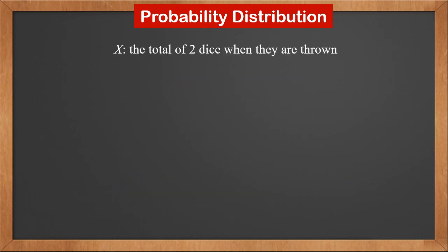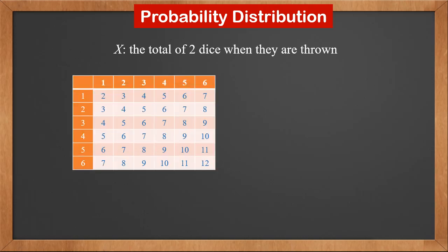Now let's look at another example of probability distribution. Random variable X is the total of 2 dice when they are thrown. We draw a 6-by-6 table and calculate the totals. We see that x can be 2, 3, 4, 5, 6, 7, 8, 9, 10, 11, or 12. The total number of cases is 36.